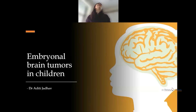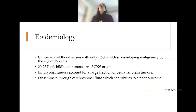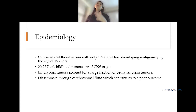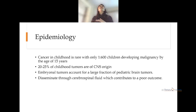Good morning everybody. Today we'll be talking about embryonal brain tumors in children. Cancer in childhood is rare; 1 in 600 children develop malignancy by the age of 15 years. Out of these, 20 to 25 percent of tumors are of CNS origin, and from these CNS tumors, embryonal tumors form a large fraction.